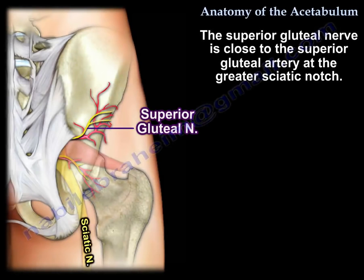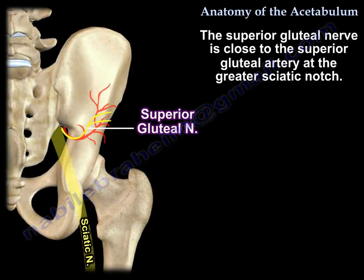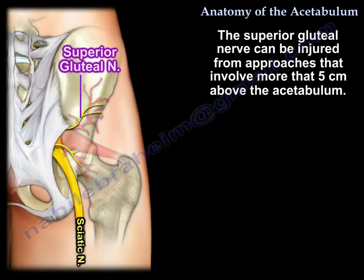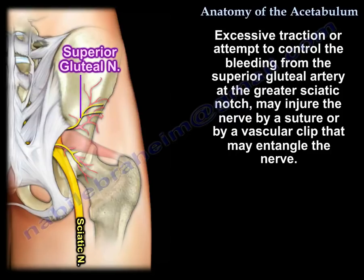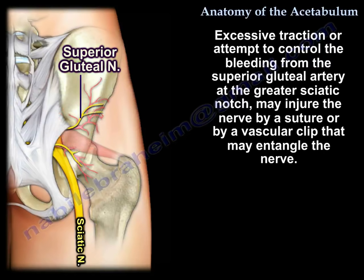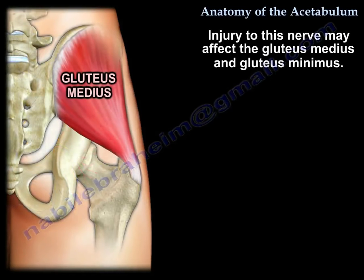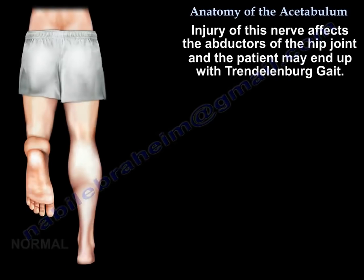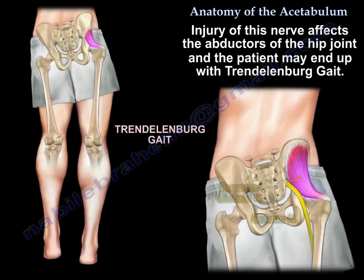The superior gluteal nerve is close to the superior gluteal artery at the greater sciatic notch. It can be injured from approaches that involve more than 5 cm above the acetabulum. Excessive traction or attempts to control bleeding from the superior gluteal artery at the greater sciatic notch may injure the nerve by a suture or vascular clip that entangles the nerve. Injury to this nerve affects the gluteus medius and minimus and the abductors of the hip, and the patient may end up with a Trendelenburg gait.